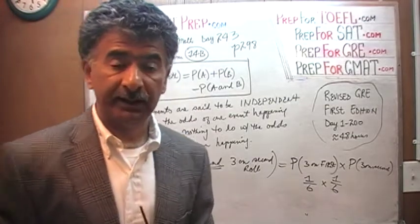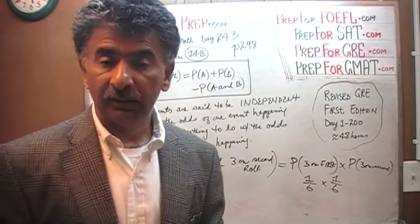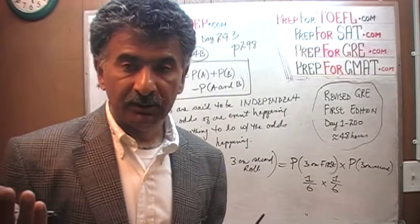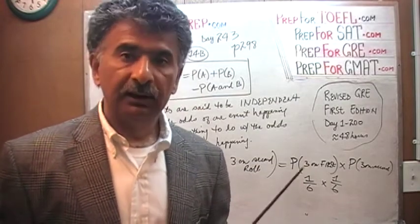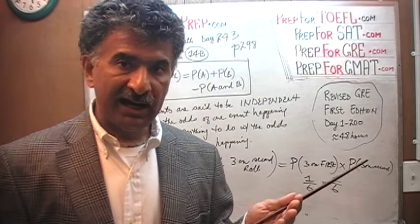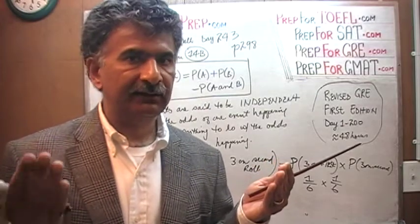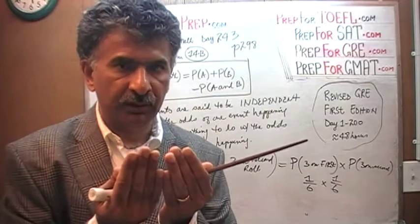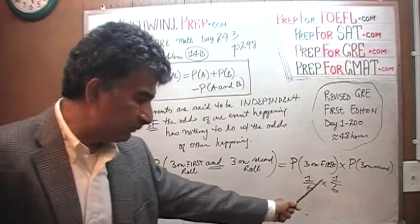Any particular number on a given roll has odds of 1 out of 6. The odds of getting one particular number on the first roll and another particular number on the second roll is the product: 1/6 times 1/6. Importantly, it is not zero — it is 1/6 times 1/6. That's the whole point.